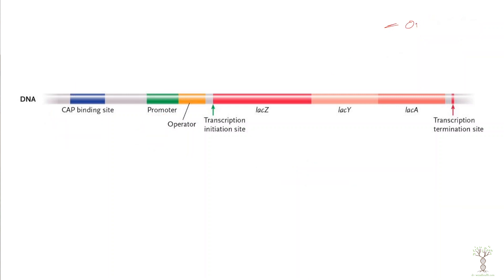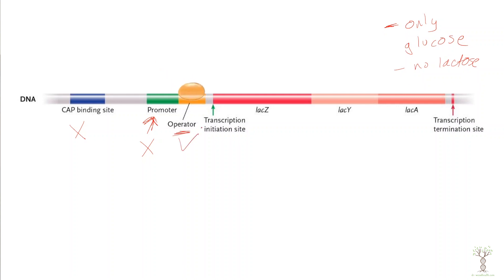In Scenario 3, only glucose is present. With glucose present, the CAP binding protein will not bind to the CAP binding site. Without CAP, the polymerase cannot bind to the promoter. With no lactose present, the repressor will bind to the operator and prevent transcription. So in this scenario we are missing the activator and we have the repressor — no transcription occurs.